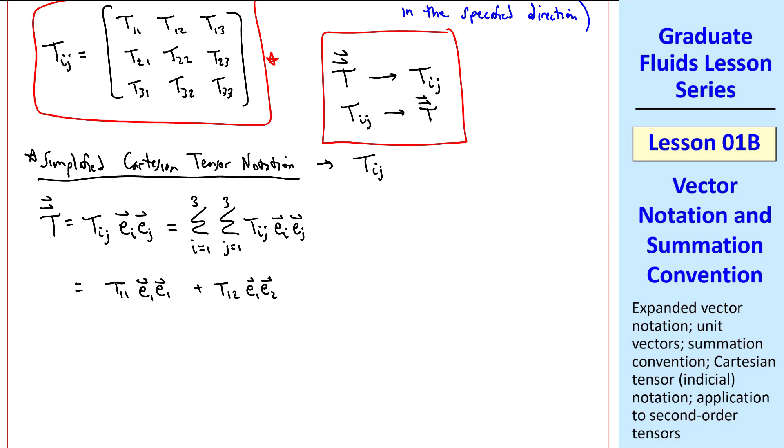So we write this as t11 e1 e1, plus t12 e1 e2, plus t13 e1 e3, plus t21 e2 e1, etc., making sure we keep all our indices straight. Notice that I put these in the same order as we commonly write the matrix. That applies both to the component of the tensor and the unit vectors.